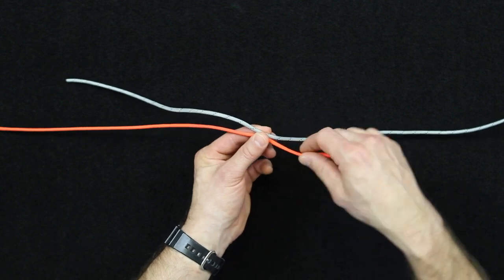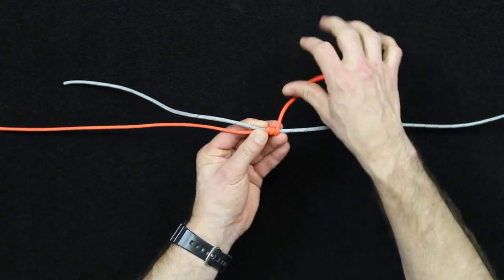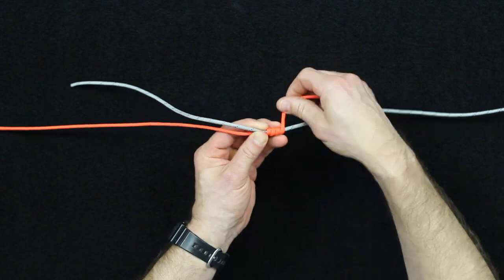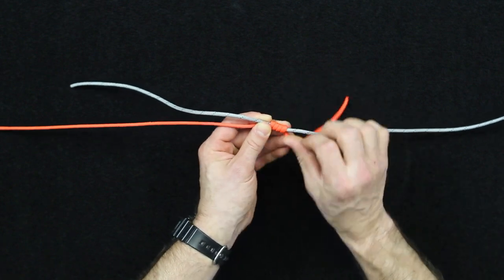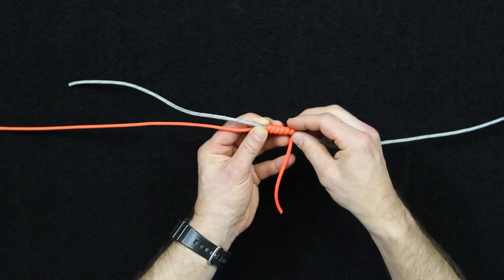So first off, you're going to start wrapping around one of the pieces of cordage here that simulates monofilament, and I'm going to try to do at least five wraps on each side. So there's my fifth wrap,